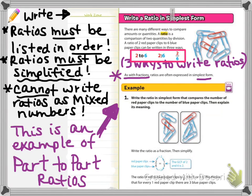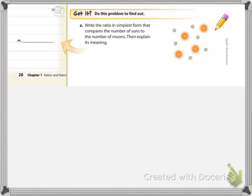They will also ask you to explain the meaning, and when they ask that, they mean for you to, in simplified terms, say, for every blank, there are blank. In this example, for every one red paperclip, there are three blue paperclips. That is all they mean when they say explain the meaning. Make sure you have everything copied, and we'll go on to the next page.